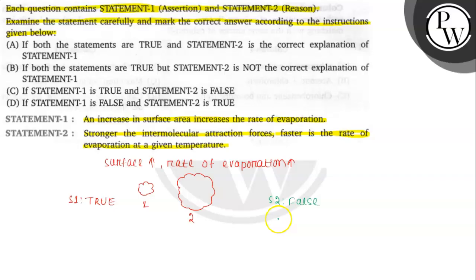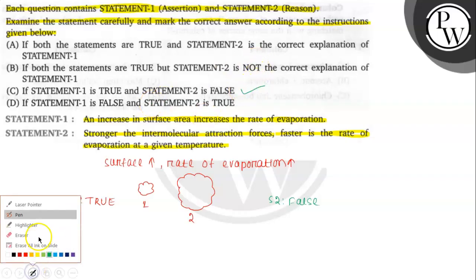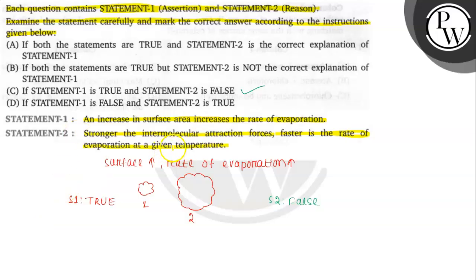Since Statement 1 is true and Statement 2 is false, option C is the correct answer. Increase in surface area allows molecules to freely evaporate, increasing the rate of evaporation. But stronger intermolecular attraction forces bind molecules together, so they cannot freely evaporate and the rate of evaporation is slower. Therefore, Statement 1 is true and Statement 2 is false — option C is correct. Hope you understood it well, best of luck.